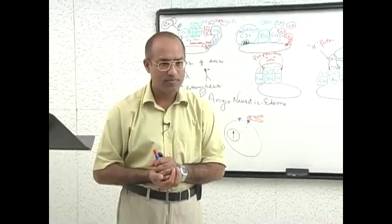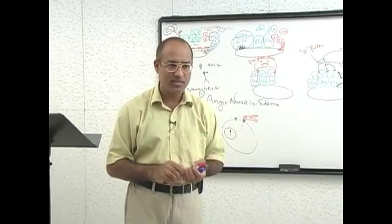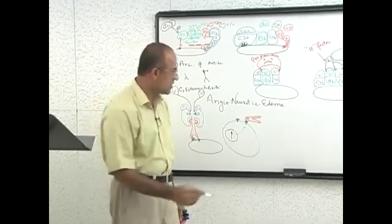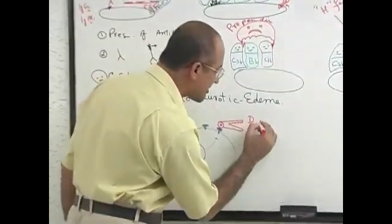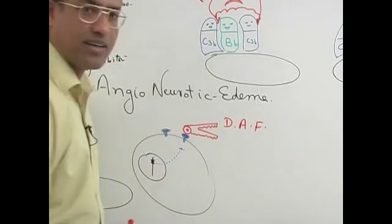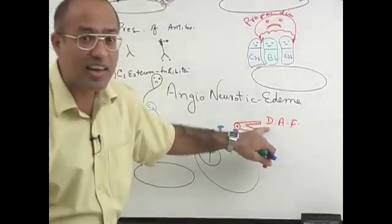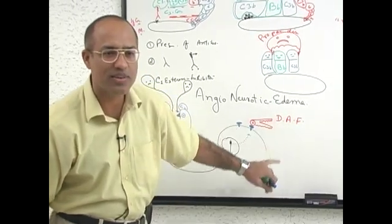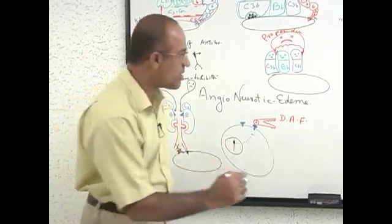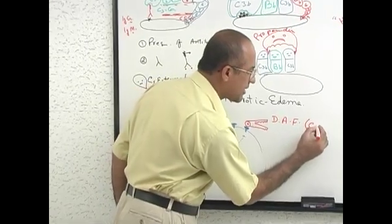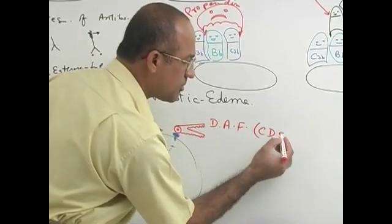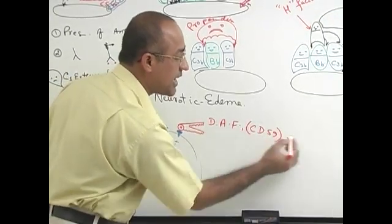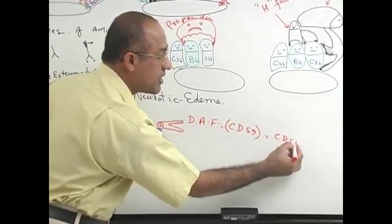One of the proteins that inhibits the complement system is called Decay Accelerating Factor. It accelerates the decay and breakdown of C3 convertase and C5 convertase. Another name for a similar protein with similar functions is CD59.